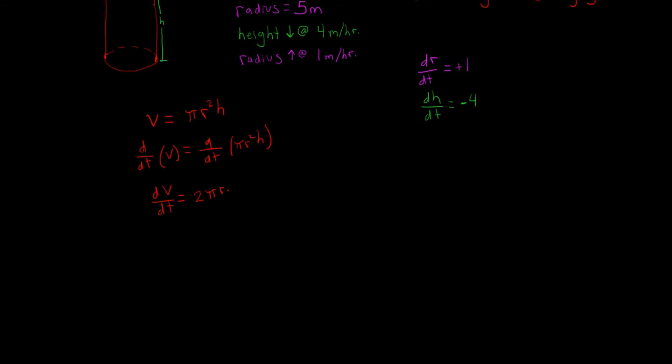Pi is just a constant, so we're going to multiply 2 by pi to get 2pi. Then we have our variable r, and h is treated as a constant at that instant — for example h could be 8 — so it's just multiplied by a constant. That gives us 2pi r times h, and then we also multiply by the derivative of the radius with respect to time, because it's implicit differentiation.